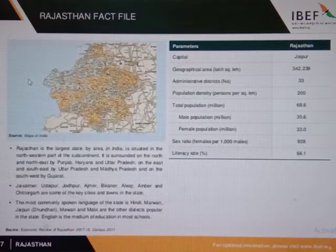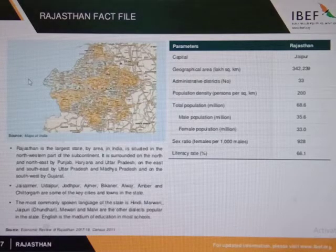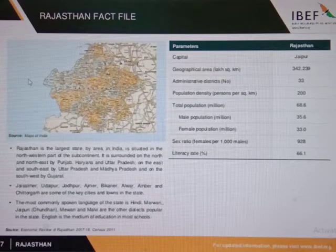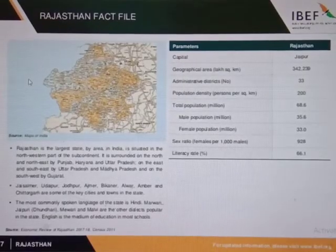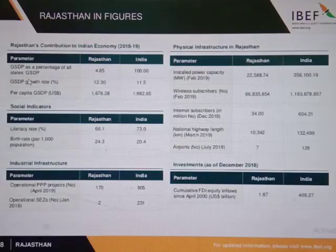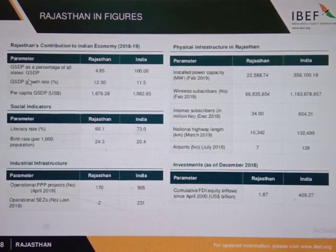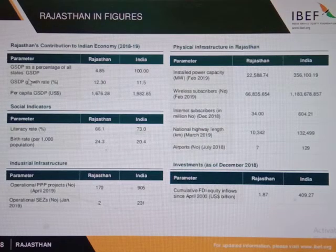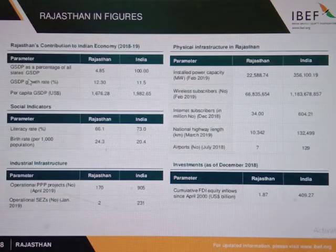Rajasthan is the largest state by area. Total population is 68.6 million. Literacy rate is 66.1%. Rajasthan contributes 4.85% of GSDP in the overall Indian economy. Rajasthan has 7 airports.